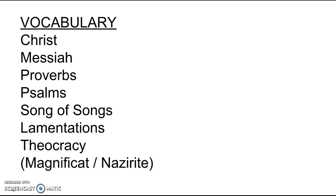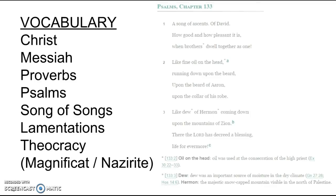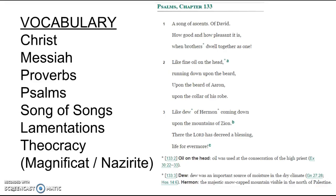Since we're on the topic of anointing, I'll make a brief jump into the book of Psalms — Psalm 133. 'How good it is and pleasant when brothers dwell as one. It is like fine oil on the head, running down upon the beard, upon the beard of Aaron, upon the collar of his robe. It is like the dew of Hermon coming down upon the mountains of Zion. There the Lord has decreed a blessing, life forevermore.'